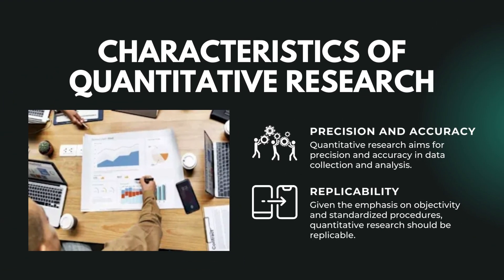Number 7, Precision and Accuracy — quantitative research aims for precision and accuracy in data collection and analysis. Researchers take measures to reduce errors and ensure that the results are reliable and valid. And number 8, Replicability — given the emphasis on objectivity and standardized procedures, quantitative research should be replicable. Other researchers should be able to reproduce the study's results using the same methods and data.